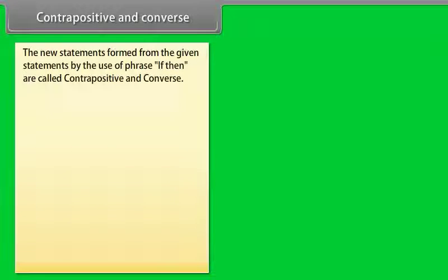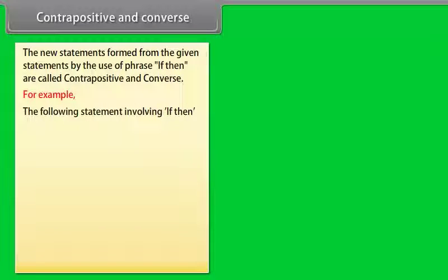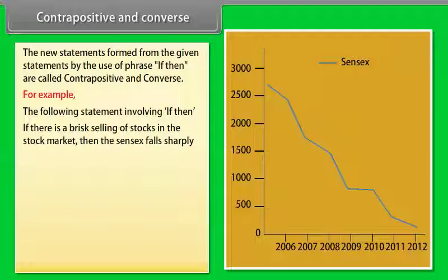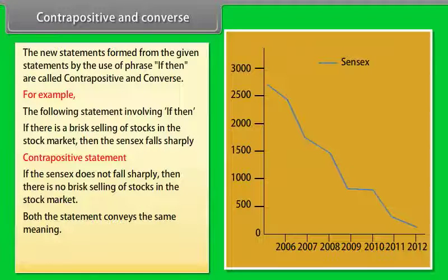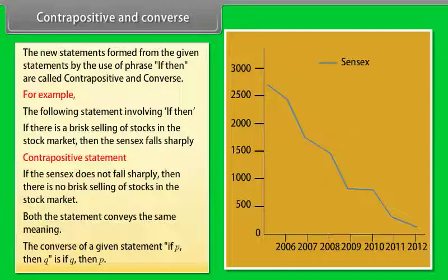Contrapositive and Converse. New statements formed from a given statement using if-then are called contrapositive and converse. For example, given the statement: 'If there is a brisk selling of stocks in the stock market, then the Sensex falls sharply.' The contrapositive is: 'If the Sensex does not fall sharply, then there is no brisk selling of stocks in the stock market.' Both convey the same meaning. The converse of 'if P then Q' is 'if Q then P.'